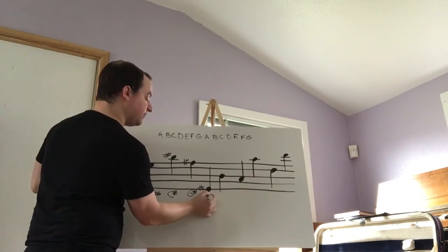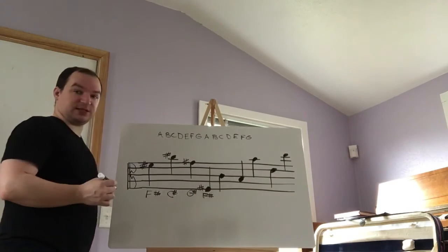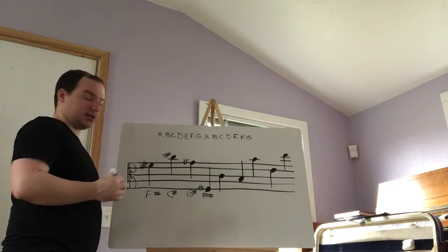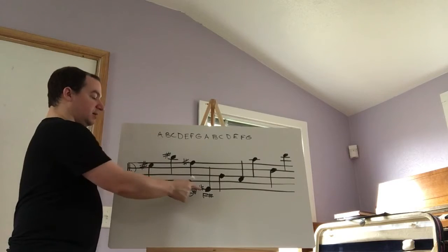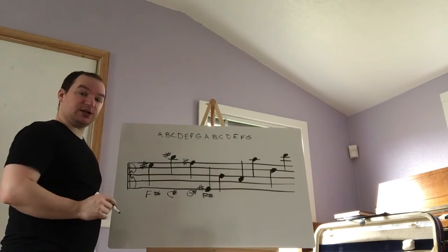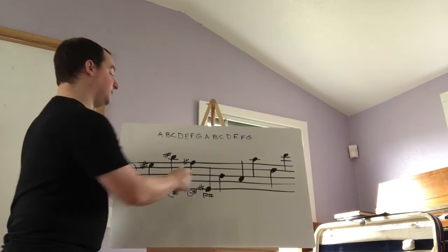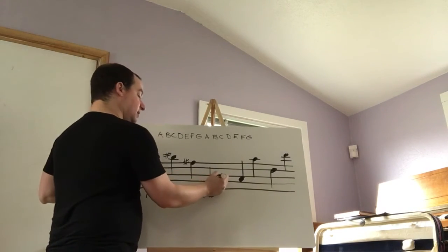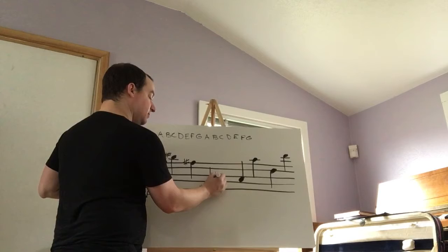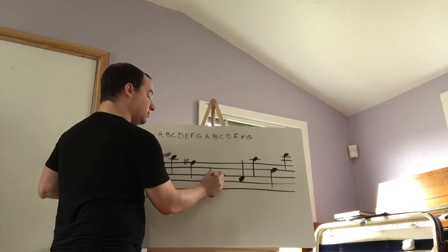So we know how to play two different F sharps at this point. There's one here and there's one here. They're both called F sharp — we just play them differently on our instrument.